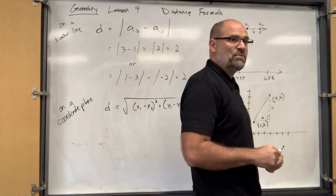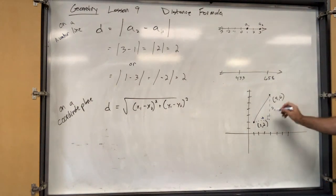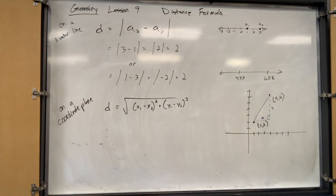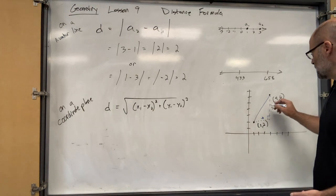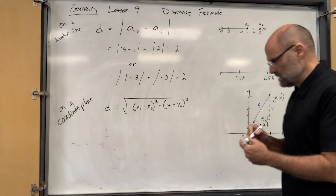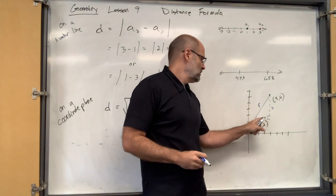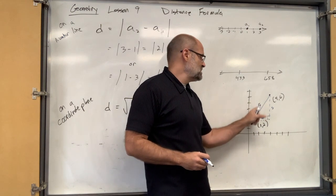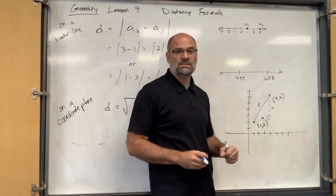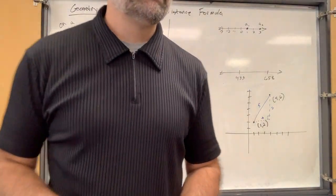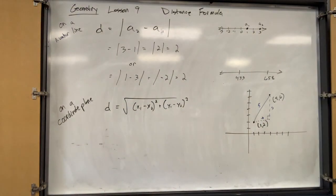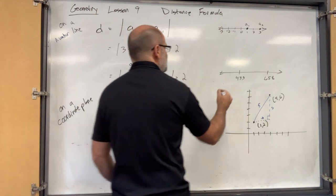Then you use the Pythagorean theorem: a² + b² = c². So 3² + 4² = 9 + 16 = 25, meaning c² = 25, so c = 5. It's also a Pythagorean triplet — the 3-4-5 triangle. Whenever I see 3 and 4 on the legs, I know the hypotenuse is 5 right away.